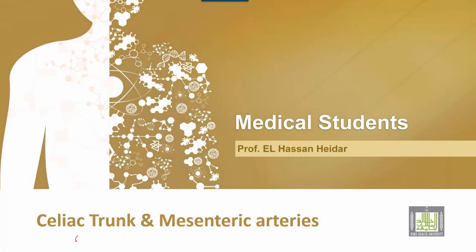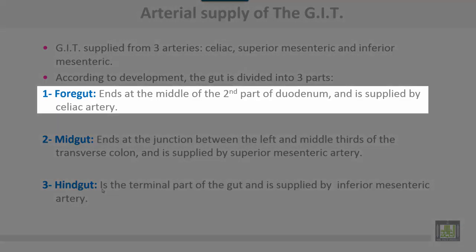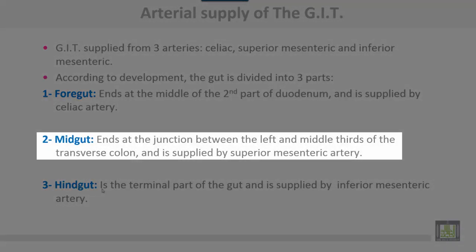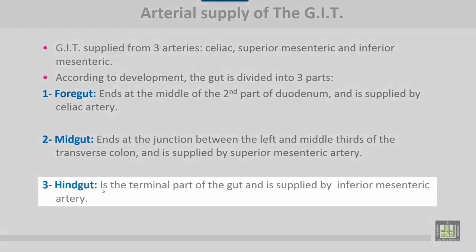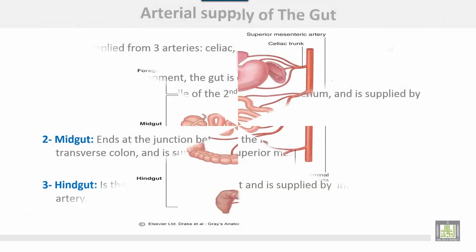Arterial supply of the gastrointestinal tract arises from three arteries: celiac trunk, superior mesenteric, and inferior mesenteric. According to development, the gut is divided into three parts. Foregut ends at the middle of the second part of the duodenum, supplied by the celiac artery. Midgut ends at the junction between the left and middle third of the transverse colon, supplied by the superior mesenteric artery. Hindgut is the terminal part, supplied by the inferior mesenteric artery.